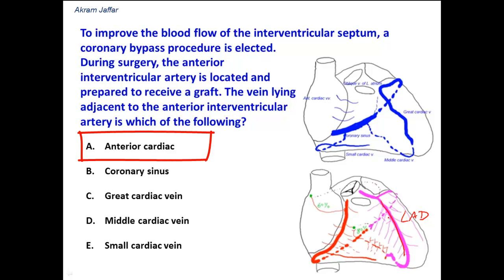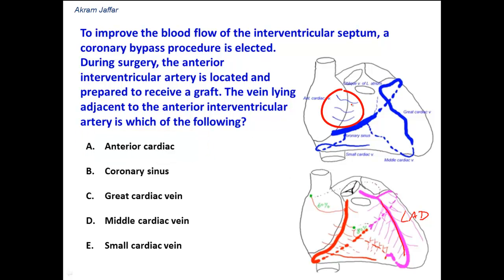Anterior cardiac vein? Actually, the anterior cardiac veins are a group of veins, as you can see here. They cross the right atrioventricular groove and they open separately into the right atrium. So, this is incorrect.